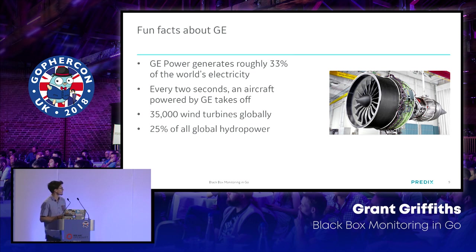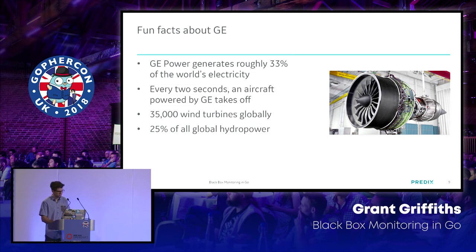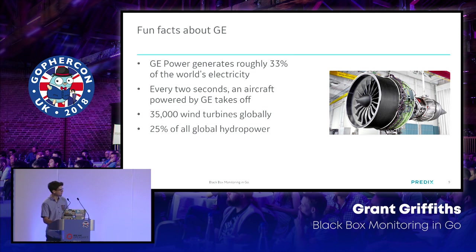Some fun facts to give you perspective: GE Power generates roughly 33% of the world's electricity. Every two seconds, an aircraft powered by GE takes off. There are 35,000 wind turbines globally, and 25% of all global hydropower is from GE. When a flight lands, there are terabytes of data that need to be ingested into our service for every flight — which is why the kind of monitoring we need to do is so important.